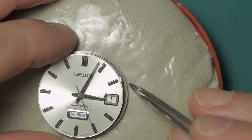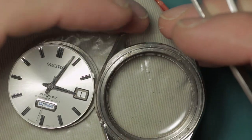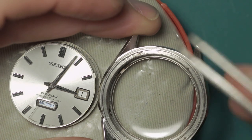You can see here a little tab - this locates into a slot. This is a common design element on Seikos with an internal bezel, and this prevents it rotating when the movement is in place. You can see there's a little slot here that that locates into.